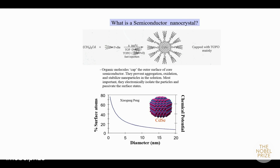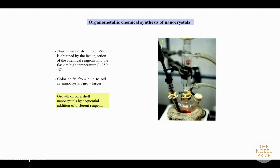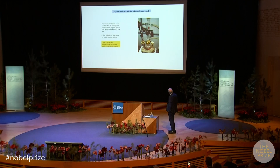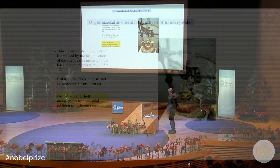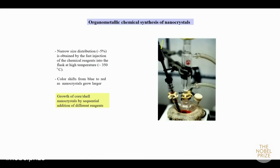I'd like to convince you this really is a branch of chemistry. Here is the apparatus for making quantum dots of a certain size — a photograph taken in my laboratory. A three-necked flask, thermocouple coming in one side, maybe 15 or 20 cc's of solvent on the bottom, a stirring bar and a septum for injection of chemicals, and a heating mantle. We can adjust the temperature and initiate the reaction either by injection through the septum or by having one reagent already dissolved in the liquid.